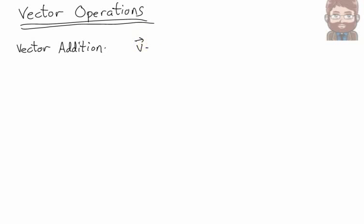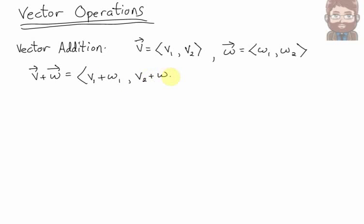So let's say I have the vector V with components V1 and V2, and the vector W with components W1 and W2. What should it mean to add these two vectors together? Well, we will define the sum as we add together the first components, and we add together the second components.